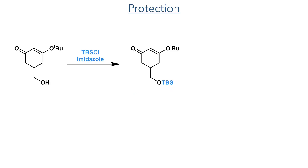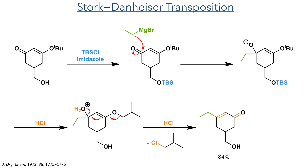The synthesis began with the protection of a cyclic enone bearing a pendant primary alcohol, which was then subject to a Stork-Danheuser transposition. Ethyl Grignard first undergoes a 1,2-addition into the ketone, and the resulting alkoxide is protonated twice by hydrochloric acid, forming water as a leaving group. The protonation promotes an elimination reaction where the double bond of the enol ether migrates and a ketone is formed upon elimination of isobutyl chloride. The TBS group was also lost during this reaction and the product was formed in 84% yield.